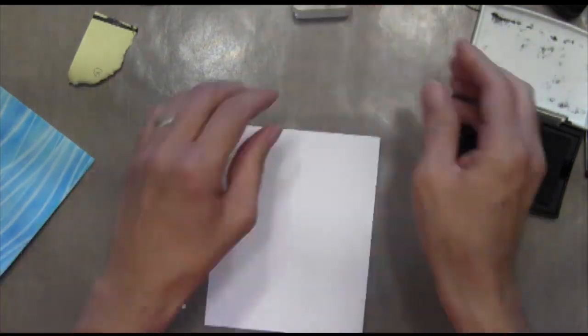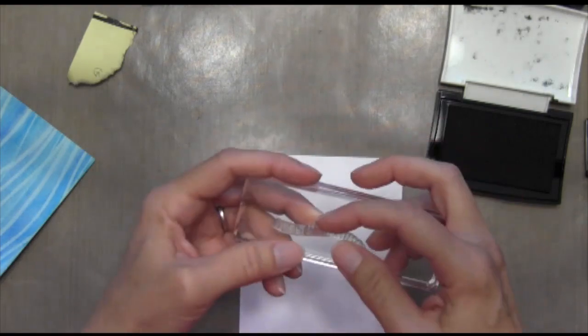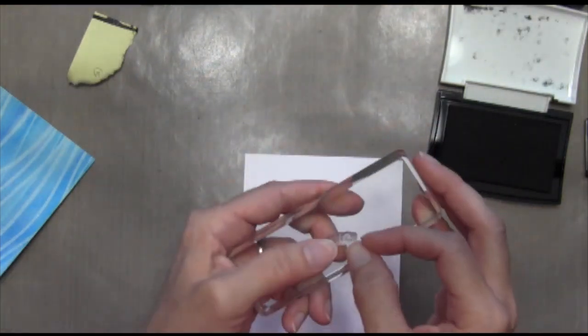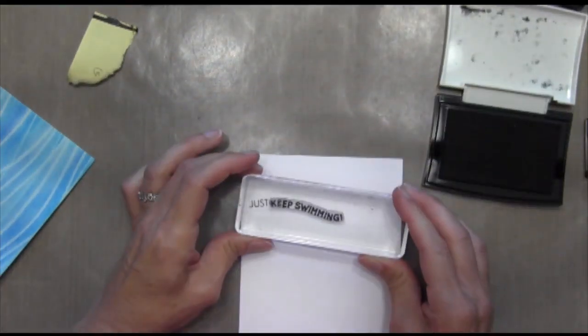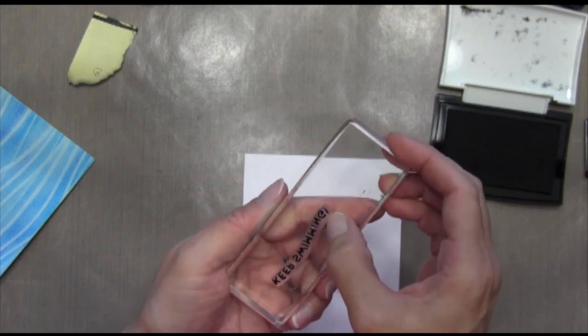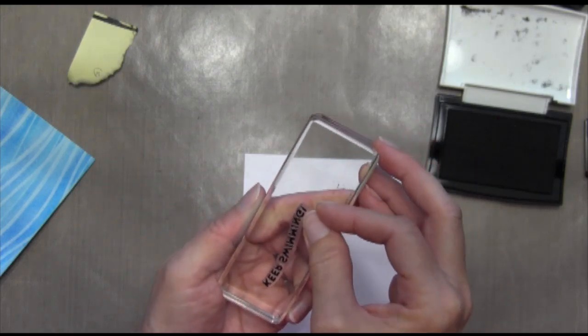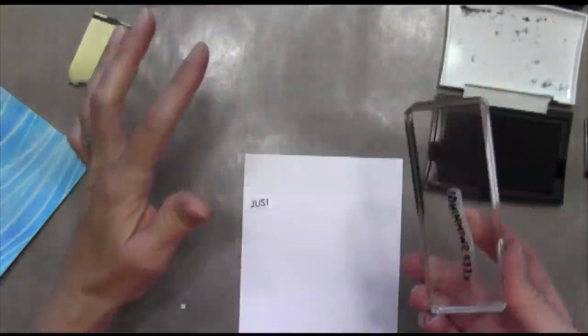And so I'm going to stamp my just and then the Keep Swimming is already wavy, but it wasn't the wave that I had on my cardstock there. So I kind of had to move it around a little bit and then it popped off a little so I squished it back down there. And I think I did a pretty good job of managing the wave shape. But you do have to adjust it a little bit.